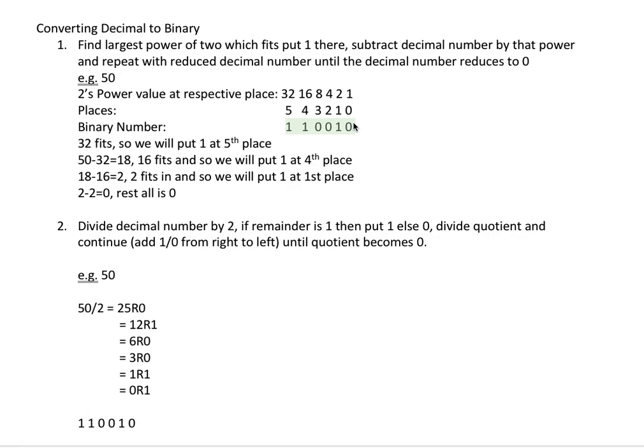You can also cross-check whether this number is correct or not. To do that you just have to do 32 plus 16 which is 48, and then 48 plus 2 which is 50. So this representation of decimal number 50 is correct.